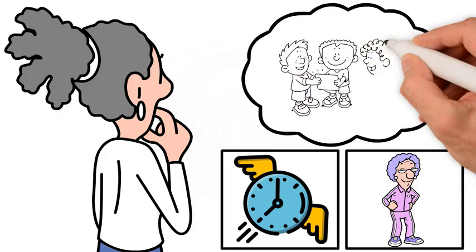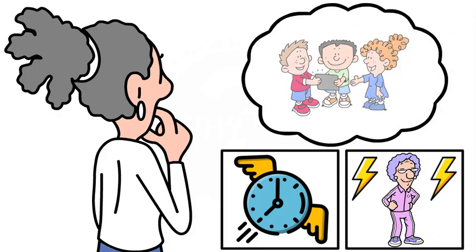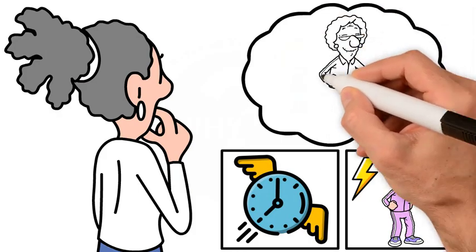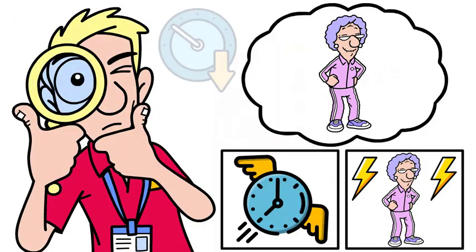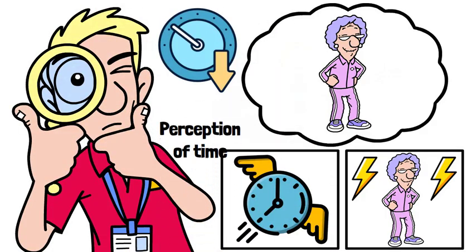Have you ever wondered why time seems to speed up as we get older? The endless summers of childhood now feel like flashes, and days blur into one another. Today, we'll explore the science behind this feeling and how we can slow down our perception of time.